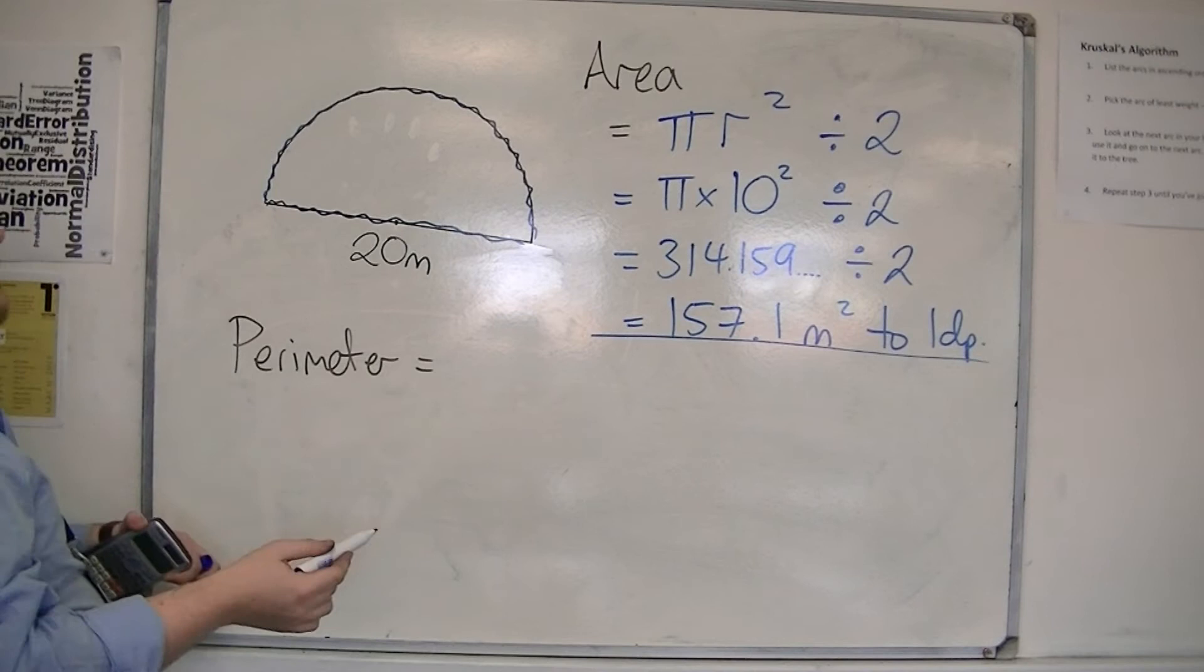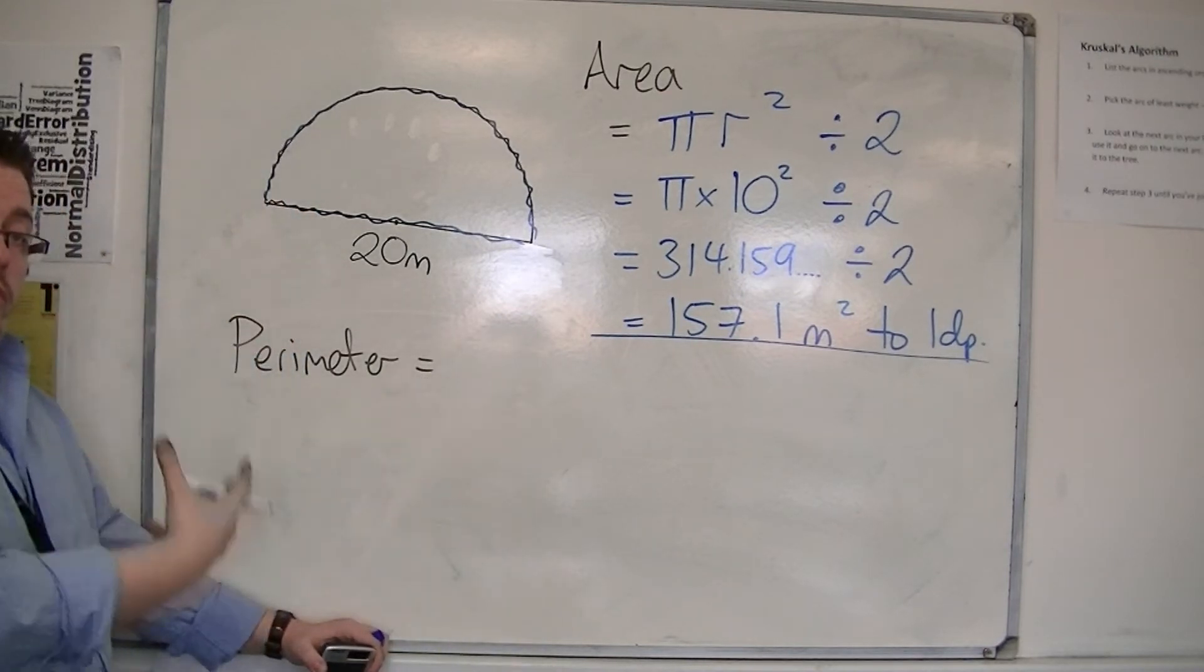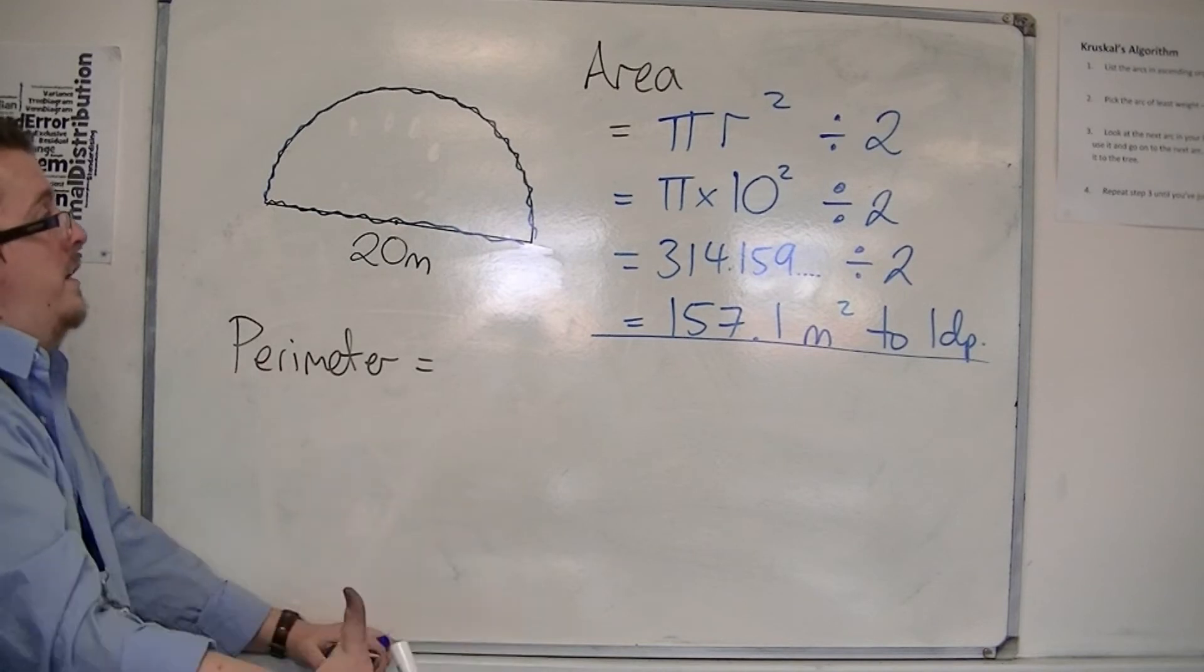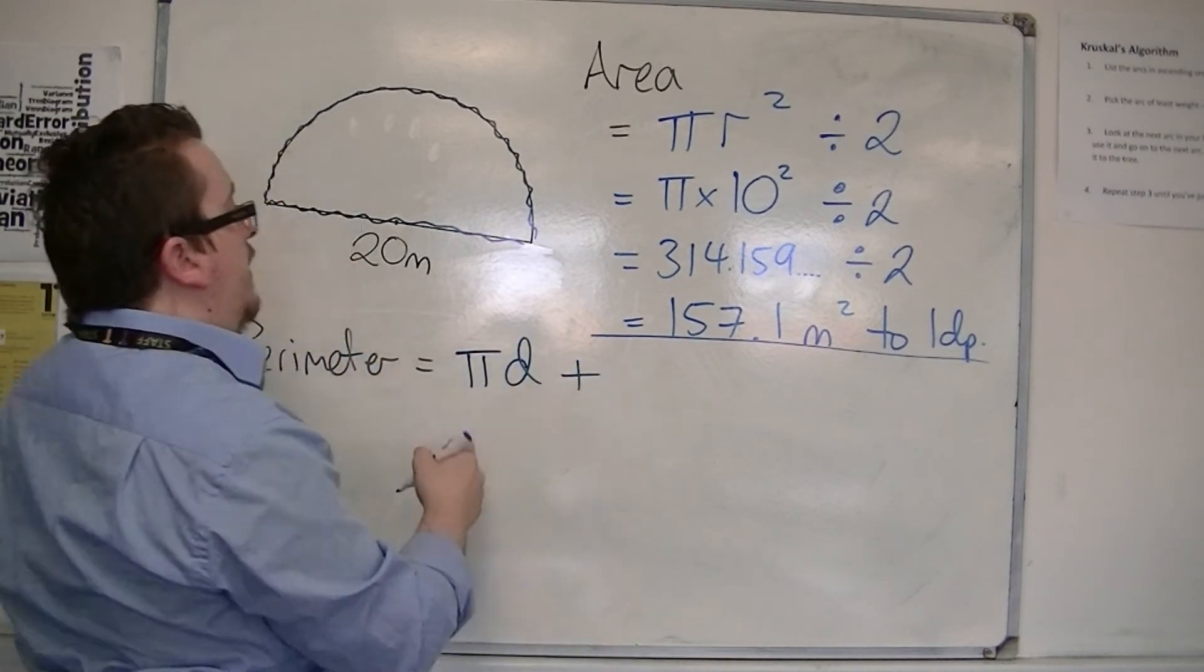So I'm going to have the circumference of the circle. It's pi d, or 2 pi r. So I'm going to use pi times the diameter, plus the diameter.